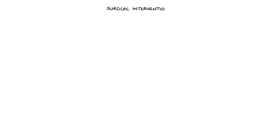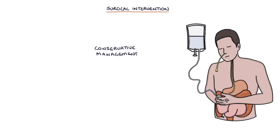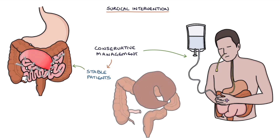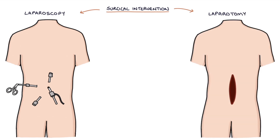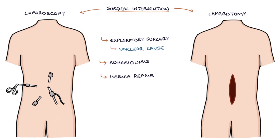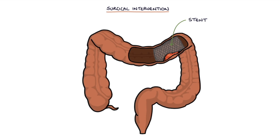Conservative management may be used first in stable patients with obstruction secondary to adhesions or a volvulus; where this fails, surgery is required. The definitive management is with surgery — either laparoscopy or laparotomy — to correct the underlying cause. Adhesiolysis can treat adhesions, hernia repair may be necessary if caused by a hernia, and emergency resection may be needed for an obstructing tumour. Stents may also be inserted during colonoscopy in patients with obstruction due to a tumour, holding the tumour out of the way and allowing bowel contents to move through.